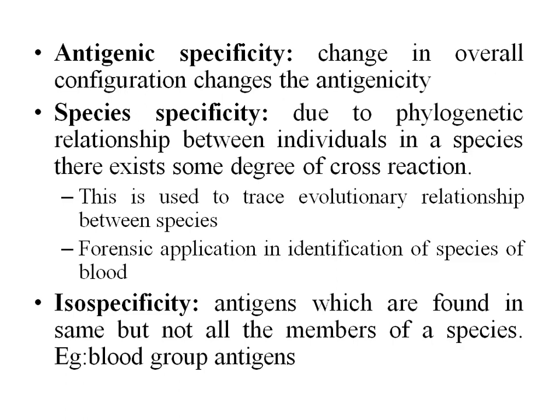Iso-specificity refers to antigens found in some but not all members of a species — for example, blood group antigens. We need to know this kind of iso-specificity for blood grouping and cross-matching.